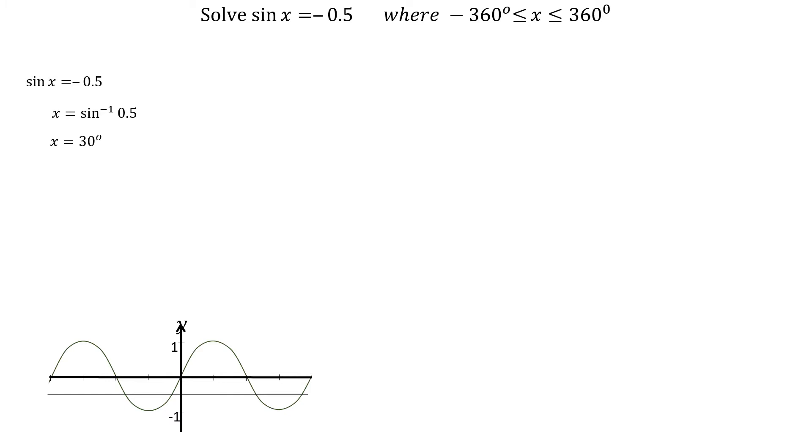30 degrees is our reference angle, as the original equation was negative. We need to show the 30 degree angles where sin is negative in the cast diagram. Sin is negative in the third and fourth quadrants, so we show 30 degrees from the horizontal in these two quadrants.